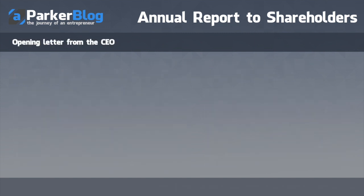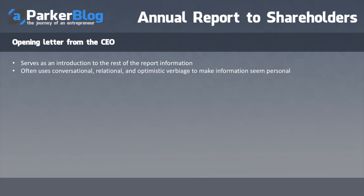Let's dive into the first element: the opening letter from the CEO. It serves as an introduction and heads up the rest of the report. From the ones I've seen, they use conversational, relational, and optimistic language to make the whole thing feel personal — talking one-on-one, sharing struggles, highlighting the team, and expressing enthusiasm for where the company is going. It ranges in length from just a couple of sentences to a few pages.